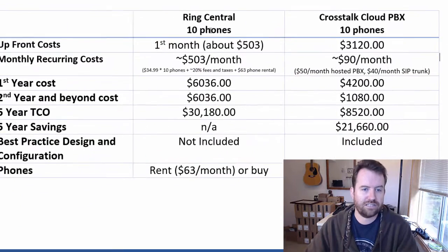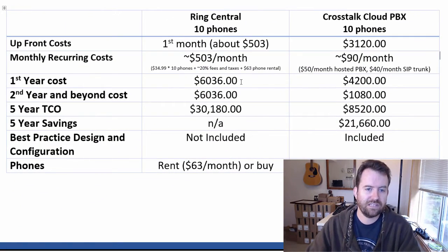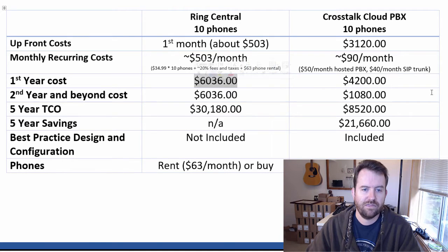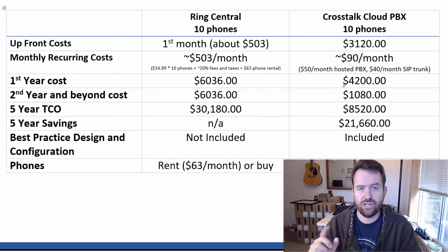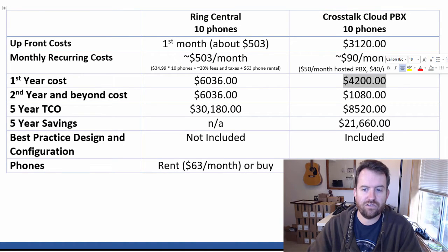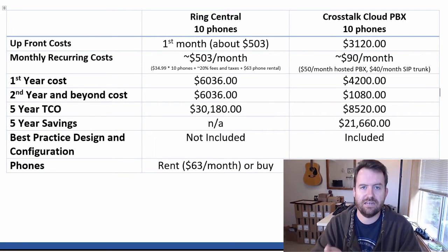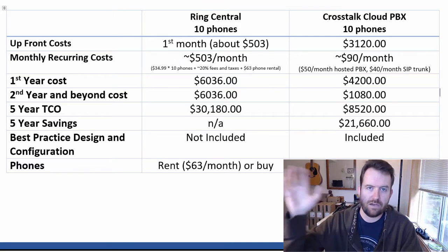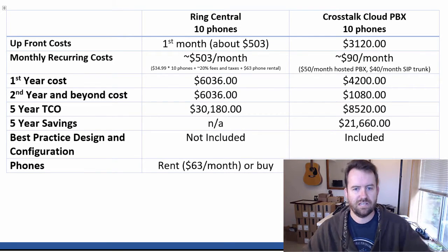So let's look at your first year cost. On RingCentral, your first year cost is $503 a month times 12 — $6,036. The first year cost for the Crosstalk Cloud PBX is about $4,200. So we're already in the first year saving over $1,800 just by going with a cloud hosted FreePBX versus RingCentral.